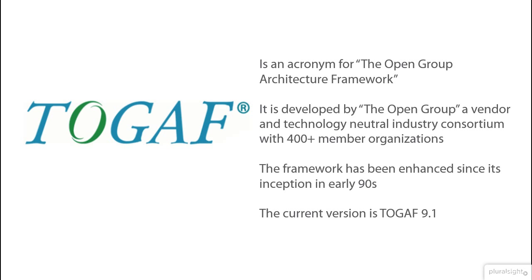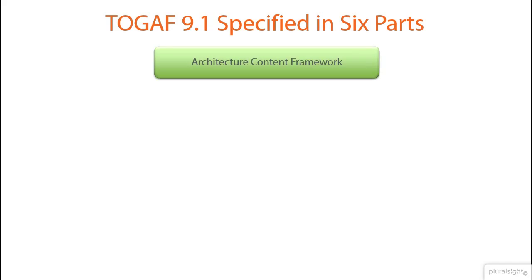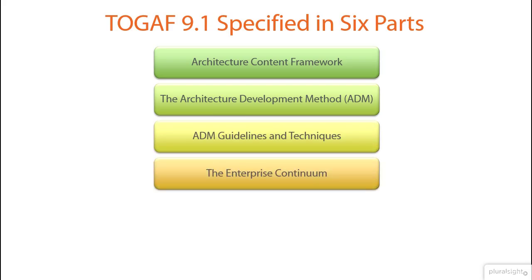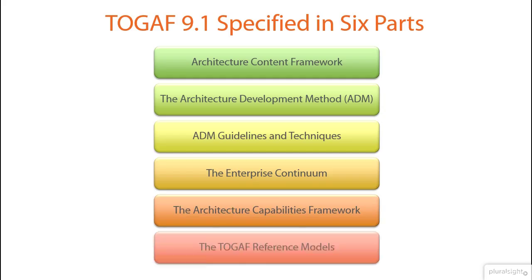The framework is specified in six major parts comprising: Architecture Content Framework, the Architecture Development Method, the ADM Guidelines and Techniques, Enterprise Continuum, the Architecture Capabilities Framework, and the TOGAF Reference Models.